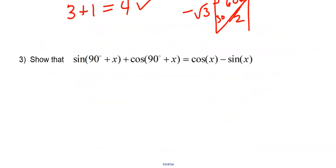Okay, show that sine of 90 plus x plus cosine of 90 plus x equals cosine x minus sine x. Well, when I see 90 plus x in here, I'm thinking of something like A plus B here. Sine of A plus B and cosine of A plus B. If it were 90 minus x, I could be thinking of a co-function property, but it's 90 plus x, so I can't do that.